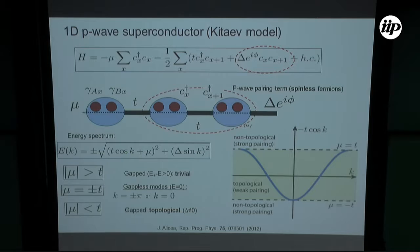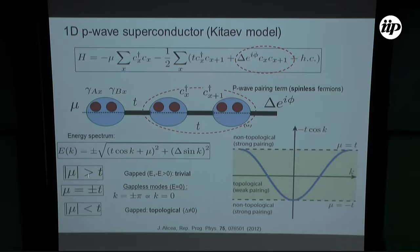Depending on parameters, you can have a gapped system or gapless modes. The gapped system can be classified by a topological invariant: when the chemical potential in absolute value is larger than the hopping T, you have the trivial phase; on the other side of this transition, where the gap vanishes, you have the topological phase — and that is where the interesting physics lies.